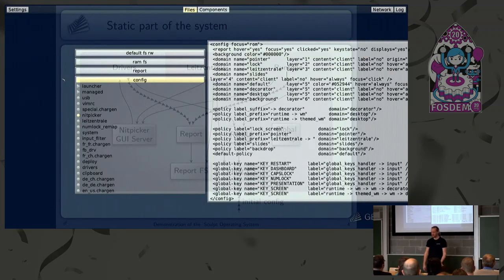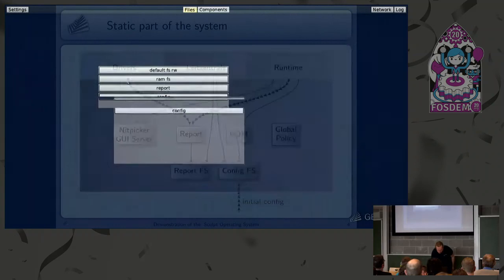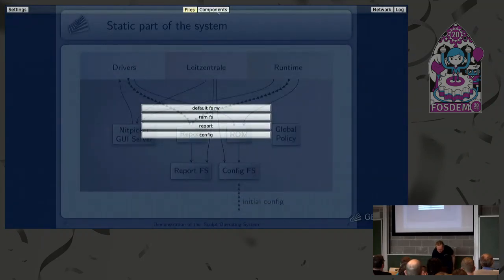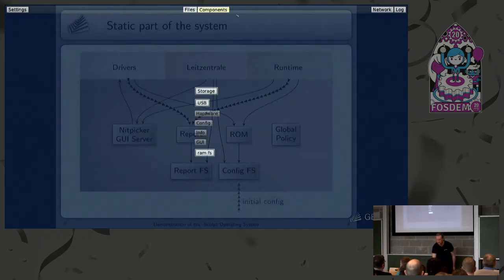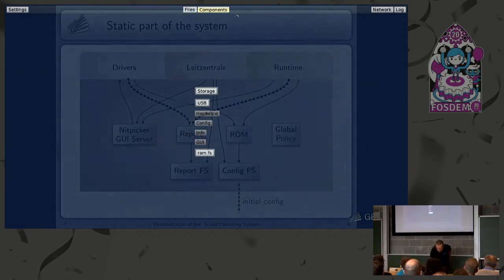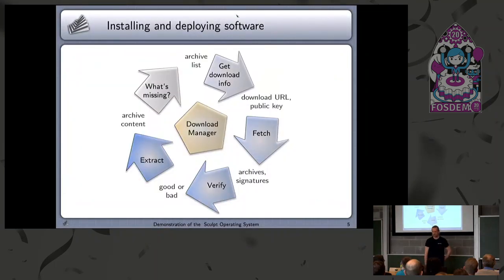So that's pretty nice to play with, but it's still quite useless. In order to use the system, we need some more. So let me go to the next topic — we want to download and install some software. That's some basic functionality of an operating system. What do we need for software installation?